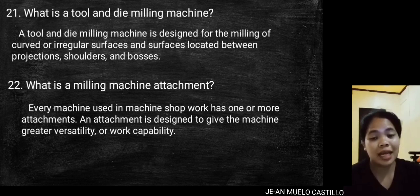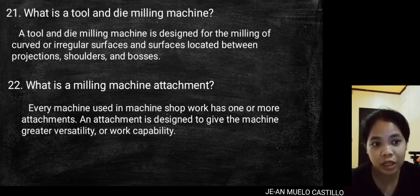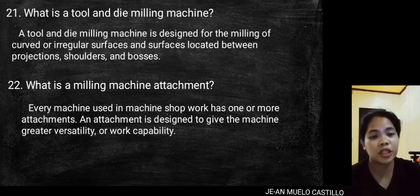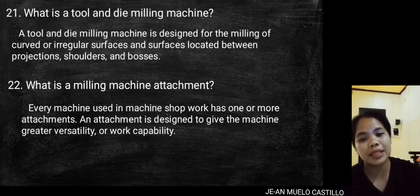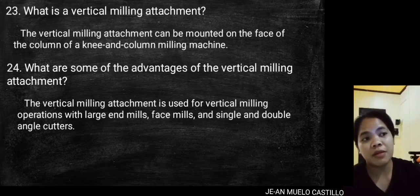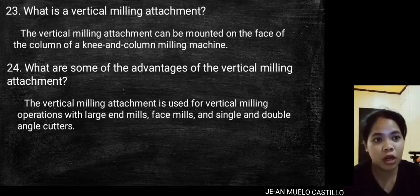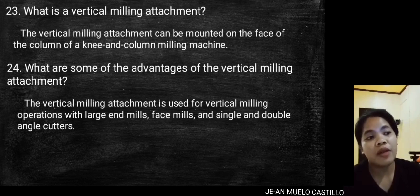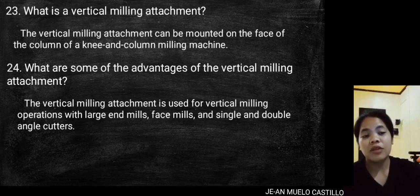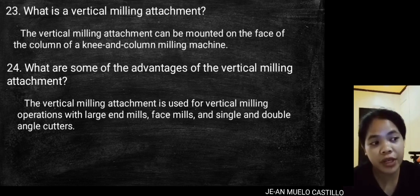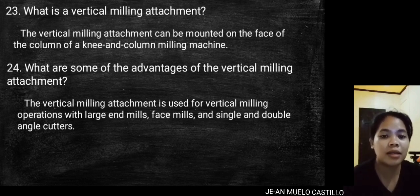What is a milling machine attachment? Every machine used in machine shop work has one or more attachments. An attachment is designed to give the machine greater versatility or work capability. The vertical milling attachment can be mounted on the face of the column of a knee and column milling machine and is used for vertical milling operations with large end mills, face mills, and single and double angle cutters.